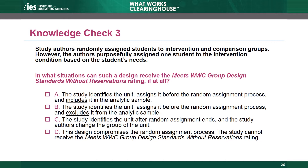Knowledge Check 3. Study authors randomly assign students to intervention and comparison groups. However, the authors purposefully assign one student to the intervention condition based on the student's needs. In what situation can such a design receive the Meets WWC Group Design Standards Without Reservations rating, if at all? A: The study identifies the unit and assigns it before the random assignment process and includes it in the analytic sample. B: The study identifies the unit and assigns it before random assignment and excludes it from the analytic sample. C: The study identifies the unit after random assignment ends and the study authors change the group of the unit. Or D: This design compromises the random assignment process so the study cannot receive the rating.